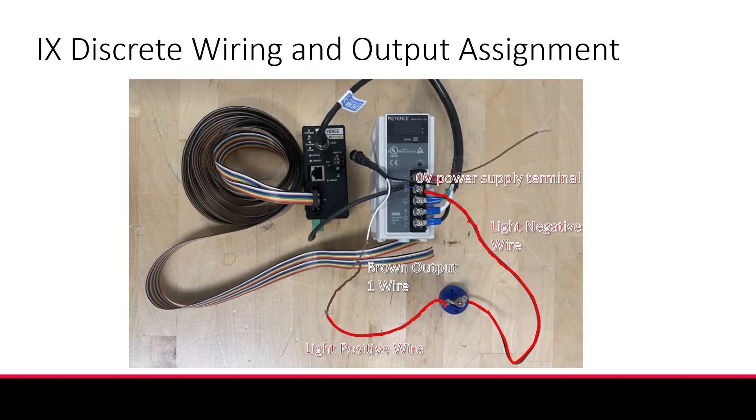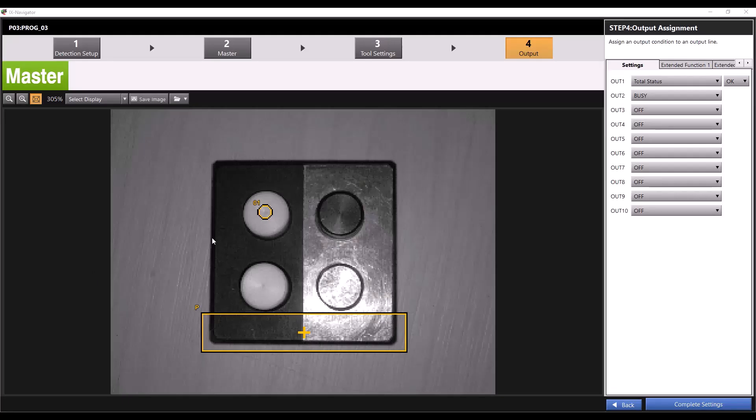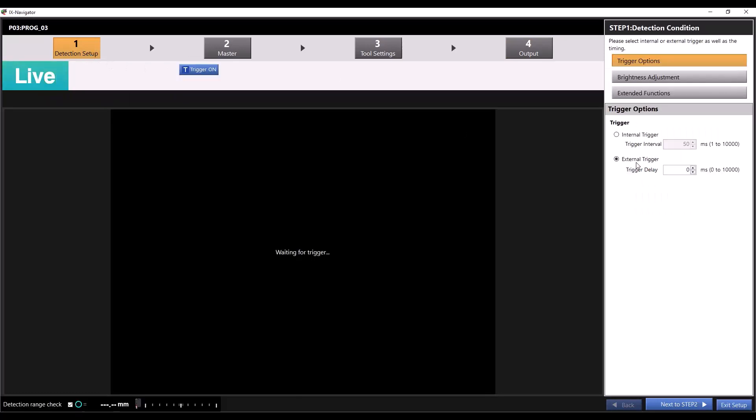Let's hop into the software and see how this works. Once you're connected to your sensor, you'll want to set up a program with tools. For information on steps 1 and 2, please refer to the master registration and detection setup video. For information on step 3, please refer to the individual tool videos. For our discrete inputs and outputs, we'll want to make sure we have one option in step 1 selected.